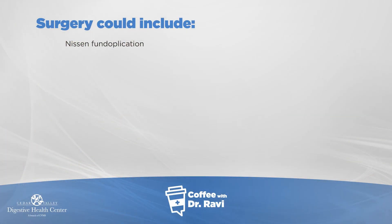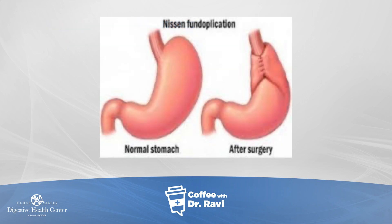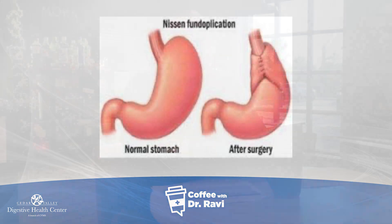There are two forms of surgery. One is called Nissen fundoplication, where they pull the stomach down and wrap it around to prevent it from coming back up. The difference between a Nissen and a Toupet is that it's not a full wrap in a Toupet fundoplication.